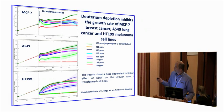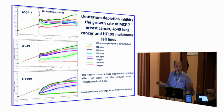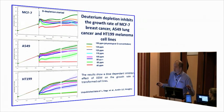Here are three different cell lines: breast cancer, lung cancer, and melanoma. Maybe the best example is lung cancer. At 150 ppm, the cells grow faster. As we reduce the deuterium concentration, we can inhibit cell growth or completely stop it, as seen here.